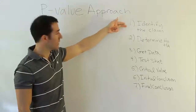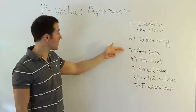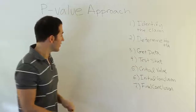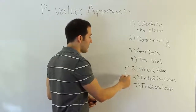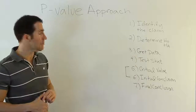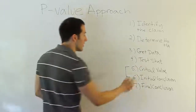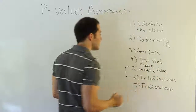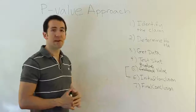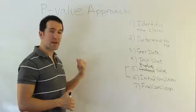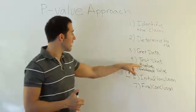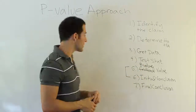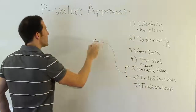The only changes are in steps five and six. The critical value is no longer used — cross it out and find the p-value instead. That's the big difference: in step five, find the p-value using the rules we just discussed. Once you have the p-value, in step six you form your initial conclusion differently.